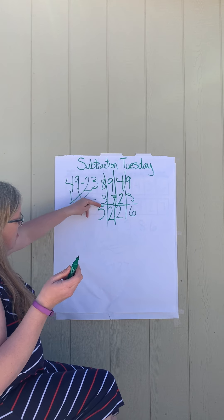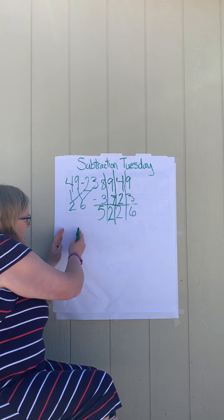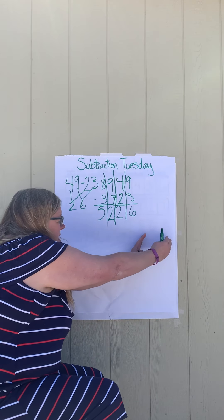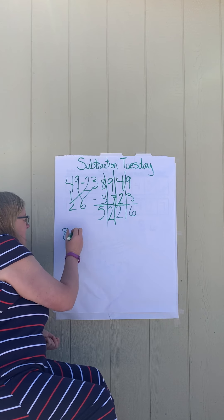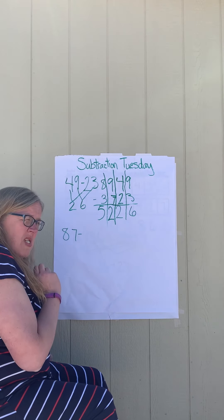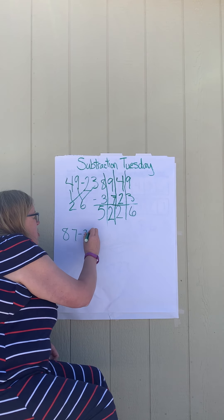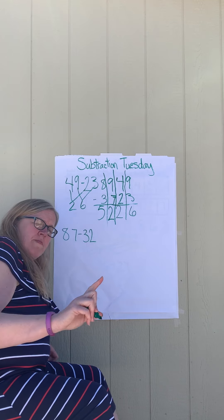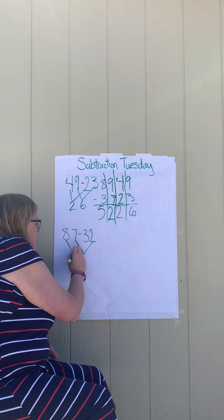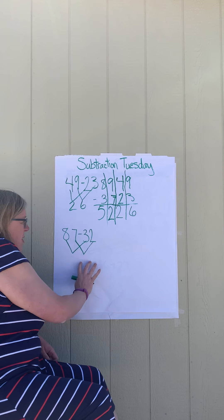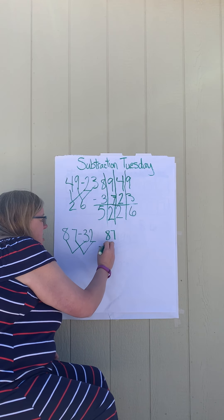Now let's try one more. We're going to start horizontally, then do it vertically, then do a number bond to see if we're right. I have the number 87 minus 32. First, connect the ones; second, connect the tens. Now I'm going to turn it into a vertical problem: 87 minus 32.